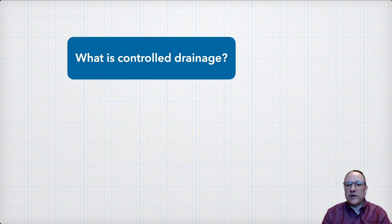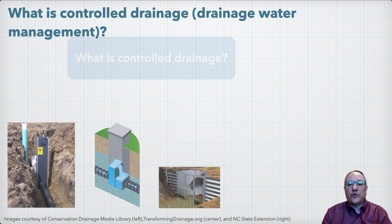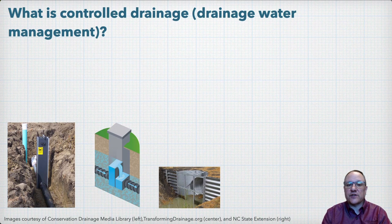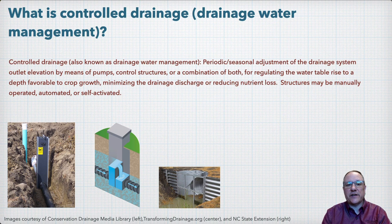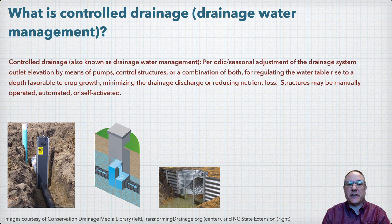Starting with what is controlled drainage: a simple definition is that controlled drainage is the use of water control structures in the drainage system to control when and how much water is released from the drainage system. A more complete working definition from the drainage group of the American Society of Agricultural and Biological Engineers, or ASABE, is shown here.